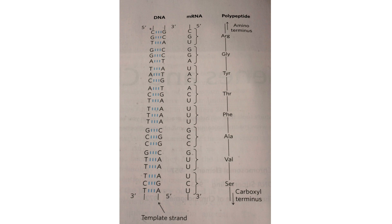DNA is a double strand. There is a strand of DNA 5' to 3', and the complementary strand is in reverse 5' to 3'. The 5' end has the phosphate attached. This is the deoxy form, so we have thymine and not uracil.